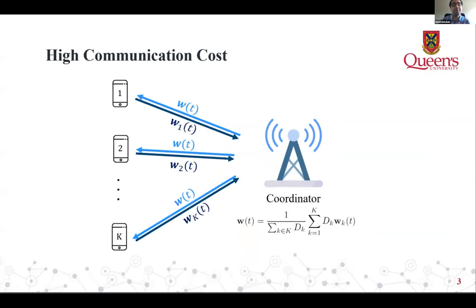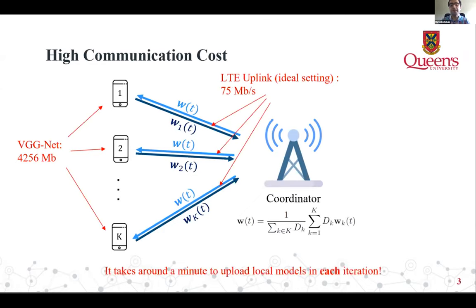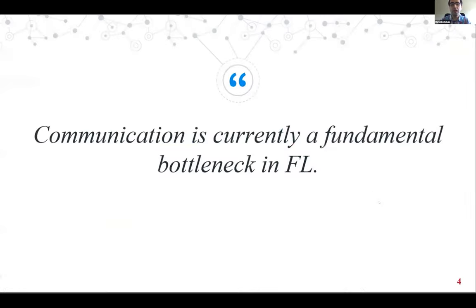High communication cost is one of the main concerns in real-world FL implementation, especially in resource-constrained user devices. In each global round, devices must upload their updated local model to the server, and model sizes can be extremely large — for example, VGG-Net has approximately 4200 megabits of data. On the other hand, the maximum LTE operating rate is 75 megabits per second in an ideal laboratory setting, meaning it would take around a minute to upload local models per iteration.